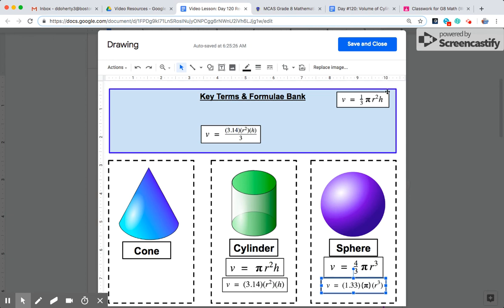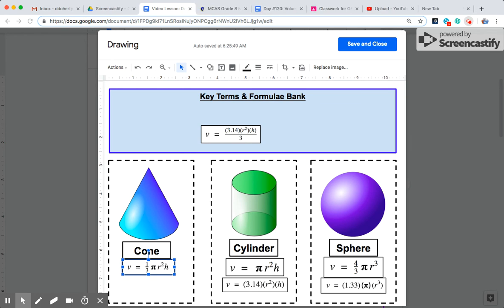The cone, that's the last formula here, it's 1 third pi r squared h. And as we talked about in Kahoot yesterday, multiplying by the fraction 1 third and then dividing by 3 is really equivalent to just dividing by 3.